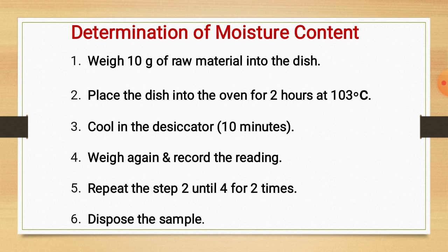For the determination of moisture content in fertilizers, the procedure is as follows: weigh 10 grams of raw material into a dish and place the dish into an oven for 2 hours at 103°C. Then cool the material in a desiccator for 10 minutes. After cooling, weigh the content again, record the reading, and repeat steps 2 to 4 twice. Finally, dispose of the sample.